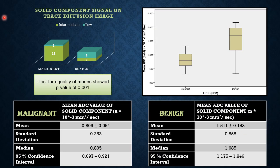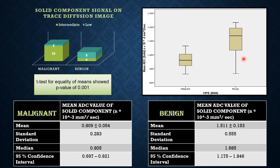Regarding ADC values: intermediate signal on trace diffusion imaging was seen in nearly 22 malignant cases and 4 benign cases. The t-test for equality of means showed a p-value of 0.001, which was significant. In the malignant group, the mean ADC value was 0.809 ± 0.054, standard deviation 0.283, median 0.805, with a 95% confidence interval of 0.697 to 0.921. The benign group had a higher mean ADC value of approximately 1.511 ± 0.153, standard deviation 0.555, and median of 1.685. Box-whisker plots showed significant difference in median values between the malignant and benign groups, with a negative skew in the benign group.